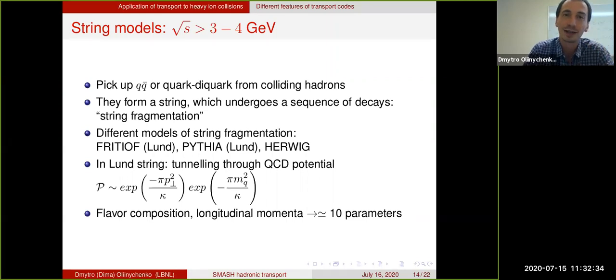One more thing for transport codes. At higher energies, if you have to collide proton with proton and the energy of collision is already higher than let's say three or four GeV, I was previously talking about hadronic collisions and specifically about two to two hadronic collisions. But now if you collide two protons at higher energies, you usually produce more than just two particles. You can produce five pions, you can produce ten pions, you can produce twenty pions. This is done using string fragmentation models. You most probably heard about PYTHIA. There are also FRITOF and HERWIG. Transport codes such as SMASH and others just unavoidably use one of the string models for higher energy collisions.